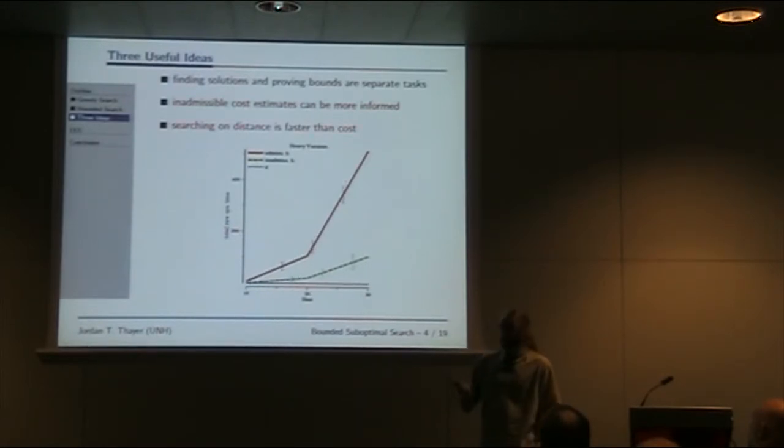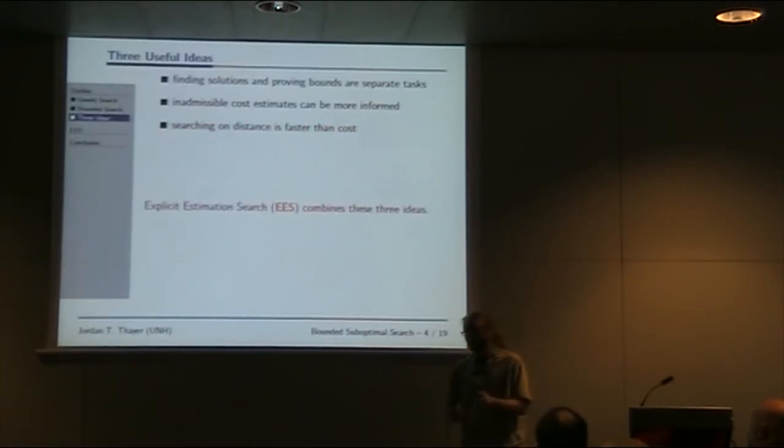The third thing is that occasionally we want to consider the length of solutions as well as cost. The difference between sum of arc costs and count of arcs. The blue line here is greedy search on the estimate of the number of actions left as opposed to the estimate of cost. Searching on this criterion greedily, we go faster. The algorithm I'm presenting, Explicit Estimation Search, is the marriage of these three ideas.